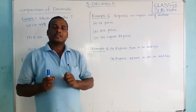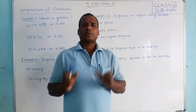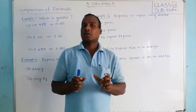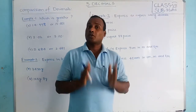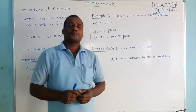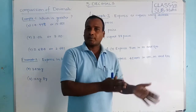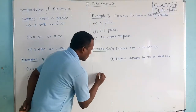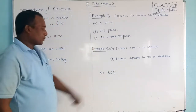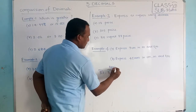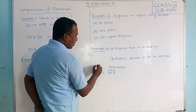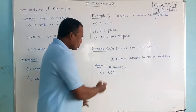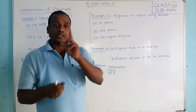So, whenever you are going to compare two decimals, first of all you have to identify the places and the numbers. There are steps you have to follow. As I already informed in the previous video, decimal numbers have two parts: one is the whole number part and another one is the decimal part.